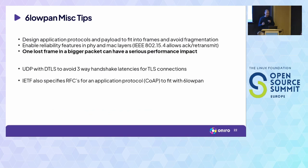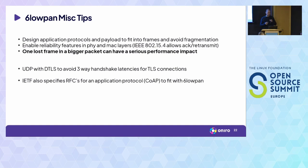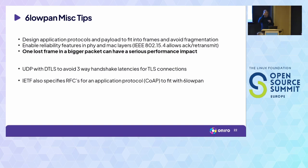Some miscellaneous tips: design your upper layers to fit data in one frame if possible, to avoid fragmentation performance issues on lossy networks. Initially there was a big push toward UDP and DTLS to avoid TCP's three-way handshake latency, but OpenThread now supports TCP and researchers at Berkeley have helped optimize it. There's also CoAP — Constrained Application Protocol — designed by the IETF for these networks, though you don't have to use it.